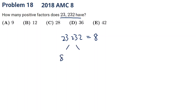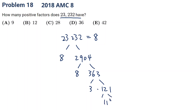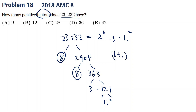We need to prime factorize the given number. It's a multiple of 8, and 2904 divided by 8 is 363. Then 363 = 3 × 121 = 3 × 11². So the number is 8 × 8 × 3 × 11² = 2⁶ × 3¹ × 11². The number of factors is (6+1) × (1+1) × (2+1) = 7 × 2 × 3 = 42 factors.